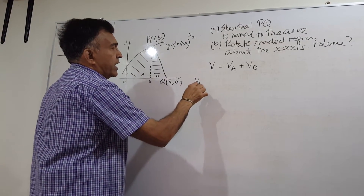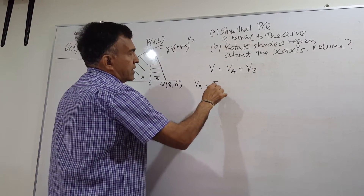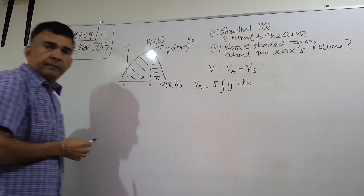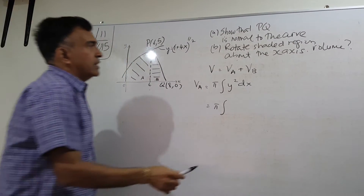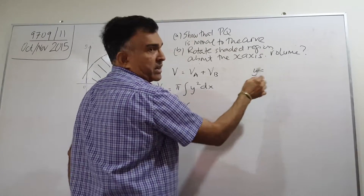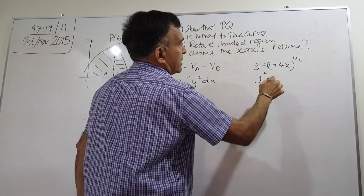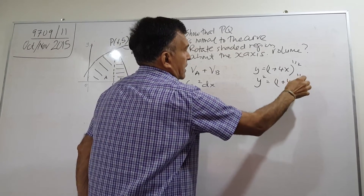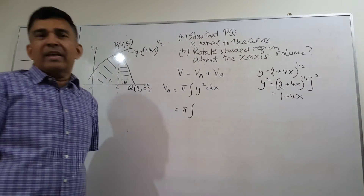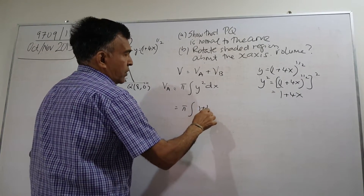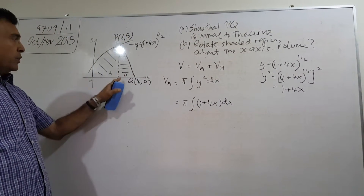Let's start with VA. Since we are rotating about the x-axis, the formula is π∫y² dx. Now y equals (1 + 4x)^(1/2), so y squared equals 1 + 4x. So we can write the integral of (1 + 4x) dx, with limits from x = 0 to x = 6.